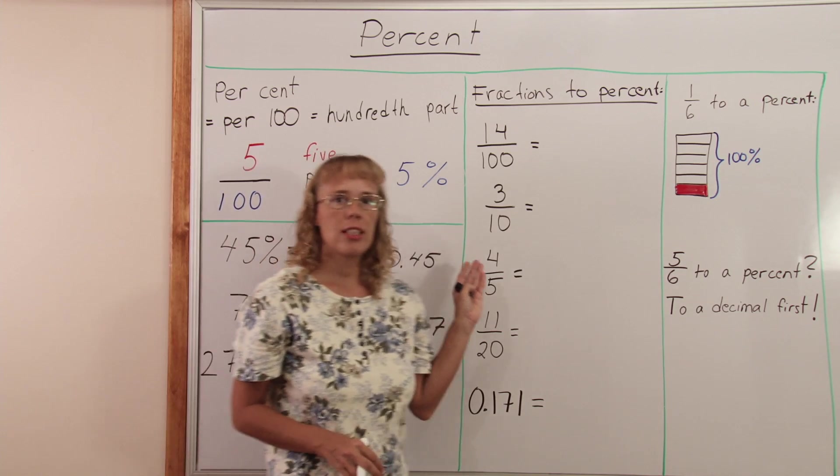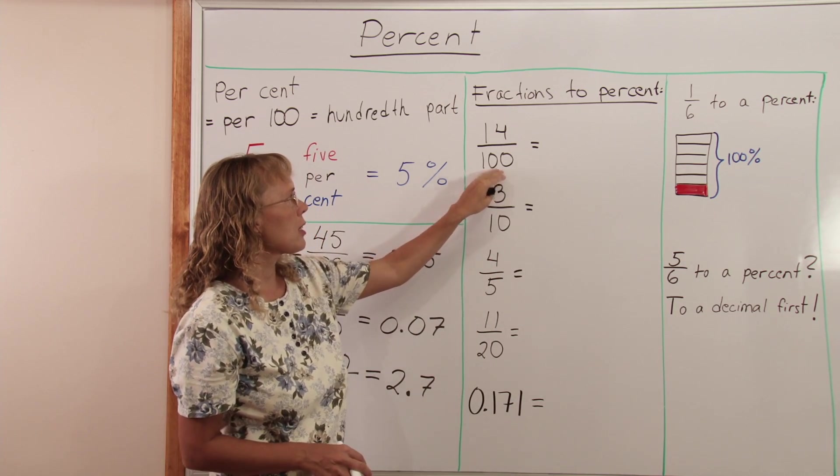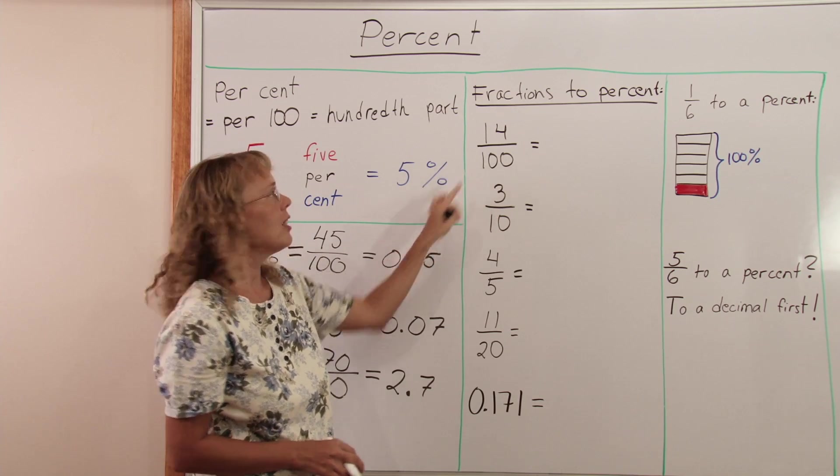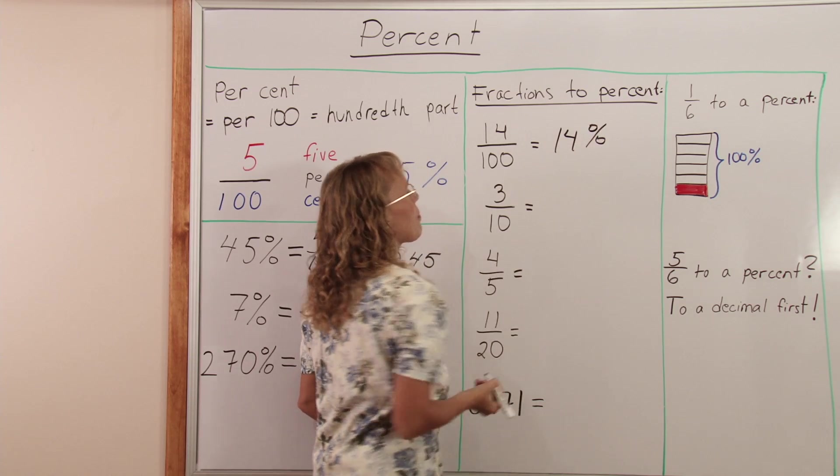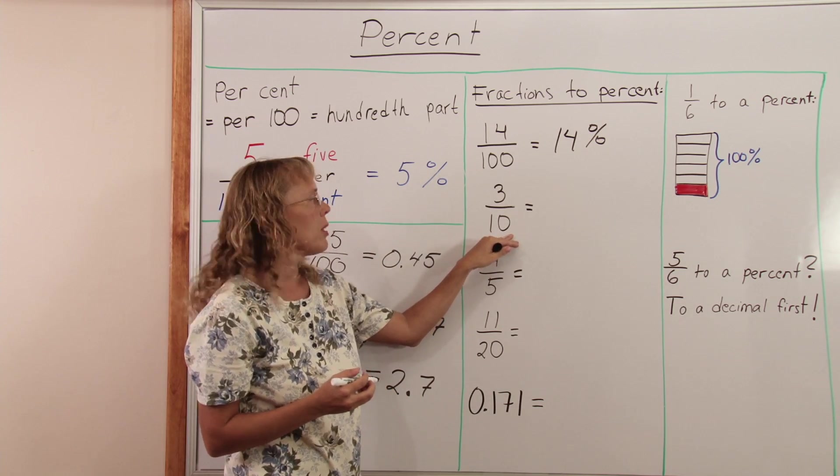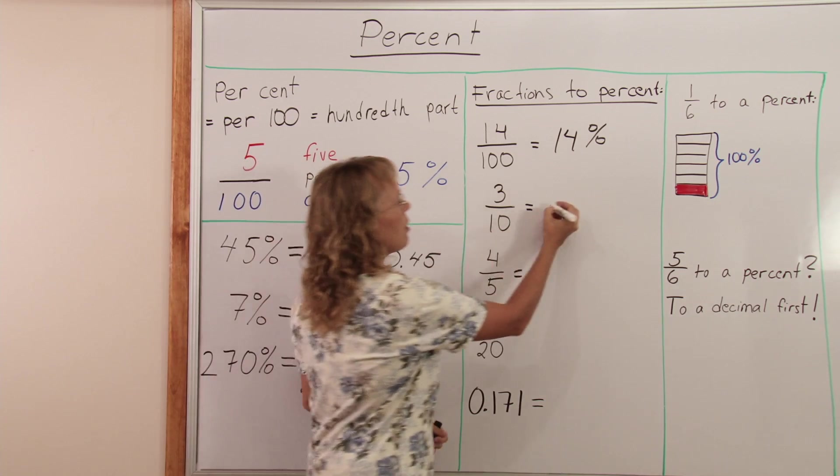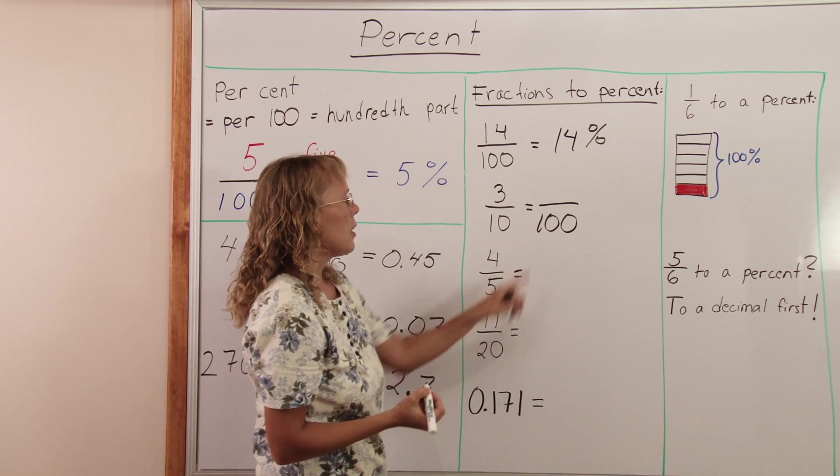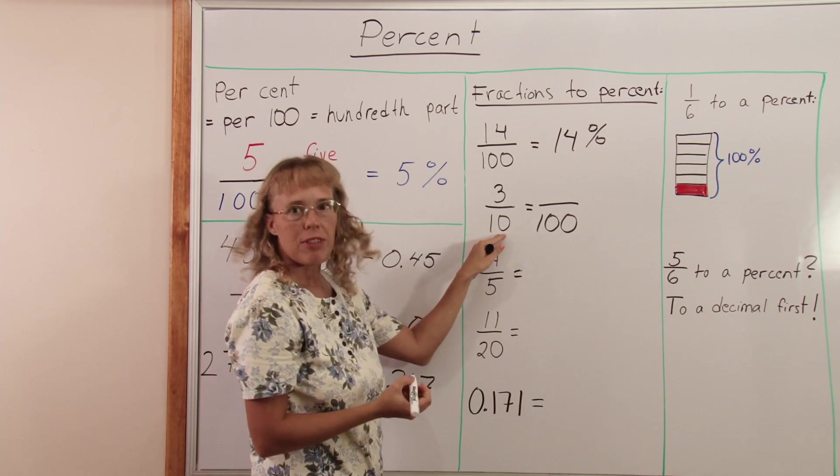Here we have some other fractions that I want to change to percent. This first one is pretty easy because it's something of a hundred. I have my per and cent already. So this is 14 percent. This one is different. It has 10 in the denominator. But I can change it very easily to another fraction with 100 in the denominator using equivalent fractions.